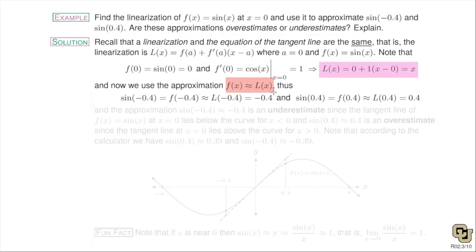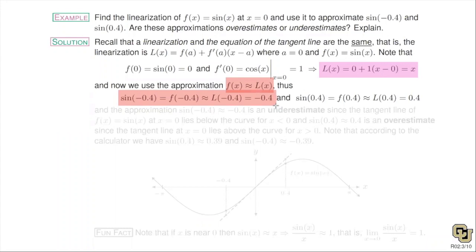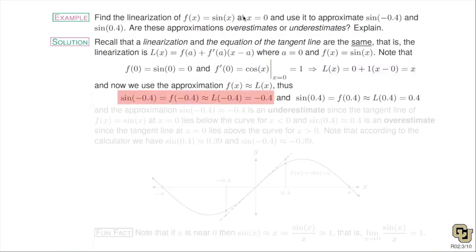Now for the actual approximation: if x is near a, instead of using f(x) I use L(x). So sin(−0.4) is f(−0.4), which I approximate with L(−0.4). But L is a very simple function — L(x) = x — so L(−0.4) is just −0.4. That's our approximation for sin(−0.4) radians. Similarly for sin(0.4) radians we get the approximation 0.4.